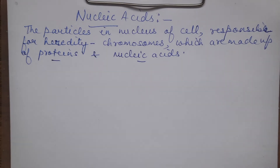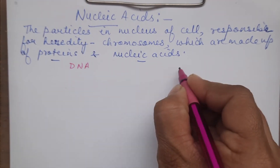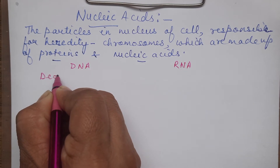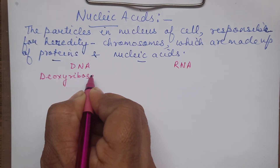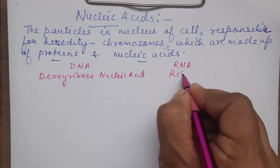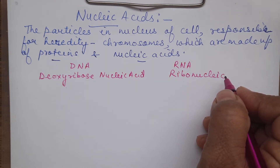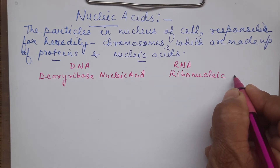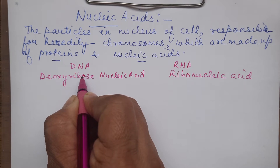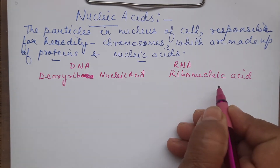Now the nucleic acids are of two types which we know: DNA and RNA. What are the full forms? DNA is deoxyribonucleic acid and RNA is ribonucleic acid.